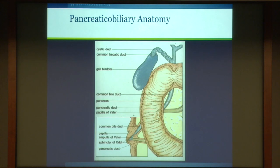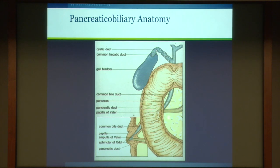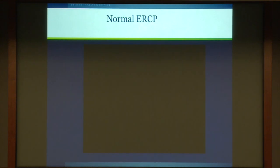Here's a quick anatomy review: the left and right hepatic ducts in the liver join to form the common hepatic duct; the cystic duct from the gallbladder joins to form the common bile duct, which empties into the second portion of the duodenum. The pancreatic duct also empties into this area at the ampulla of Vater, which houses the sphincter of Oddi, responsible for contraction and controlling flow of bile into the duodenum.